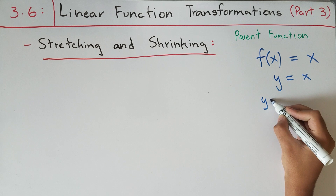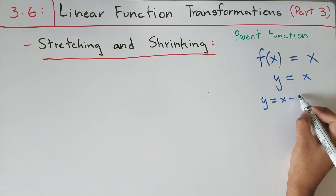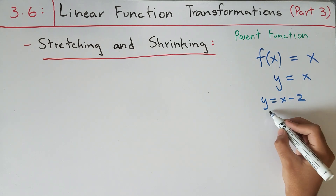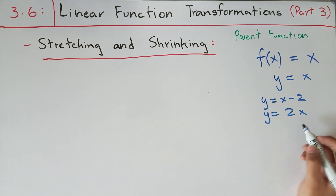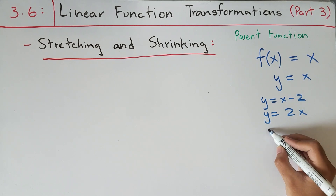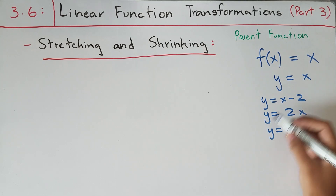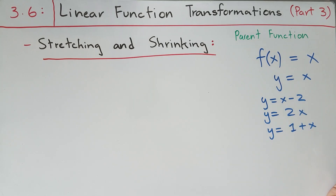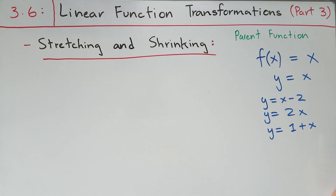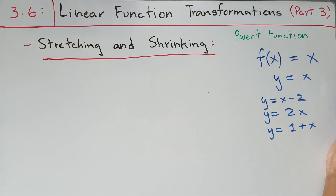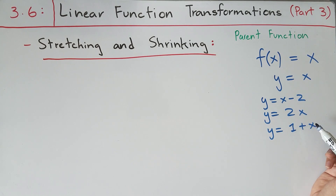So you could have y equals x minus 2, or y equals 2x, or y equals 1 plus x. All these are derived functions of the original function f of x equals x. As long as you have only x and no constant being added, like negative 2 or plus 1, then you have the parent function.